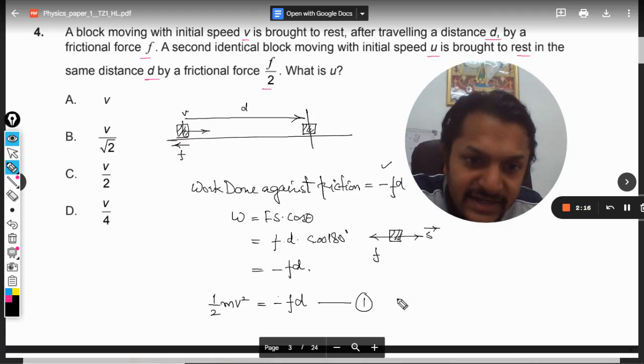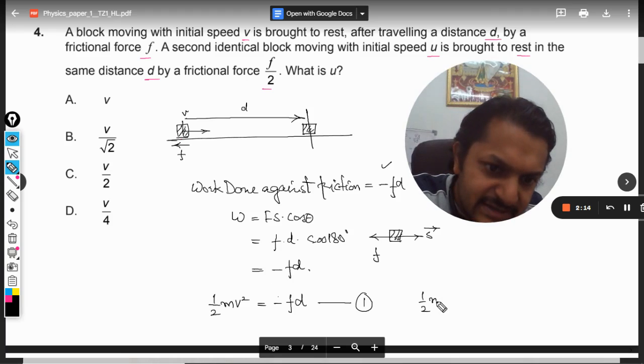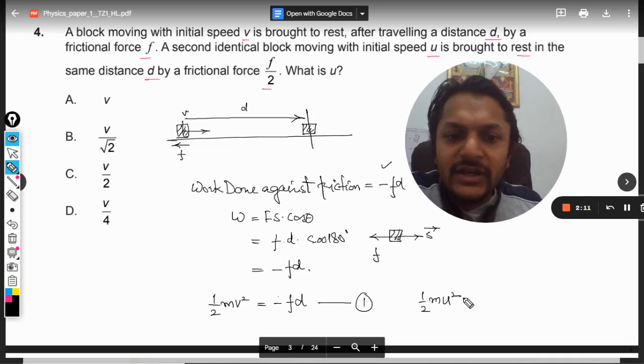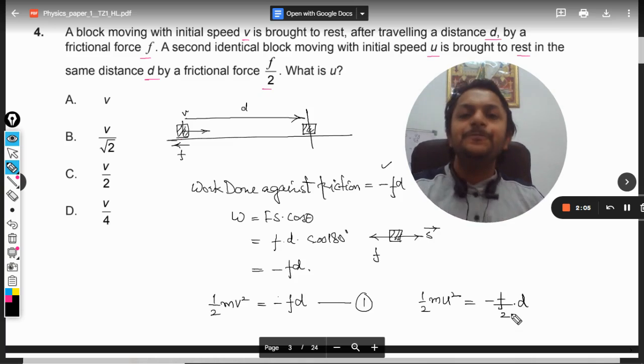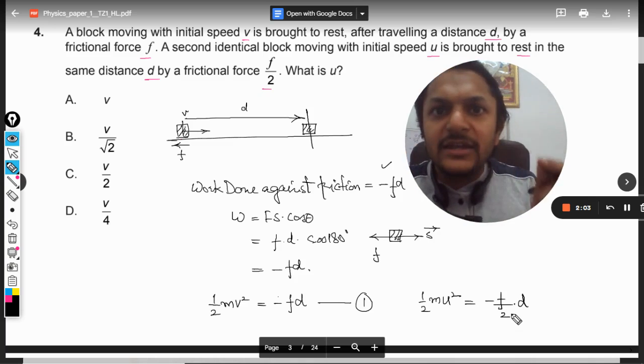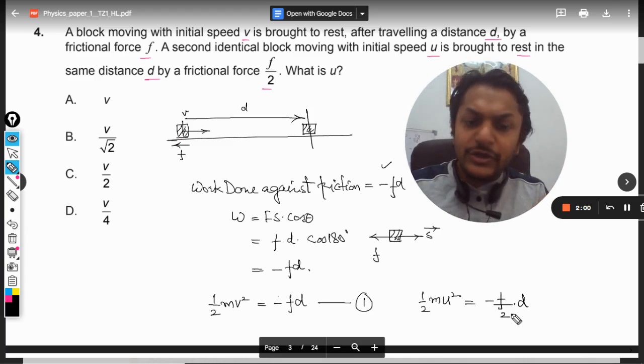Now what is the second case? According to the second case, the same body is moving with velocity U, but now only half of the friction is sufficient to stop the body in the same distance. So it will be minus F/2 into D.